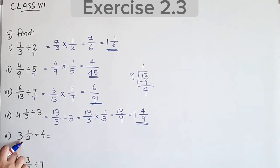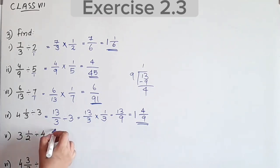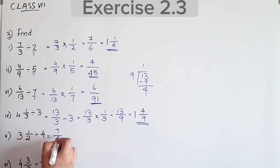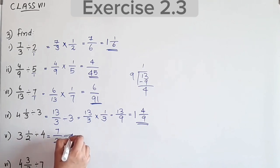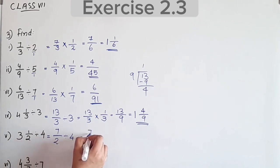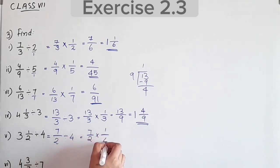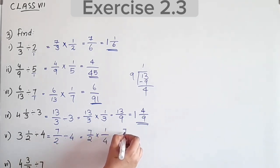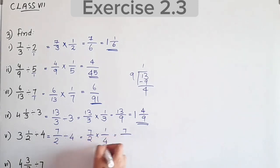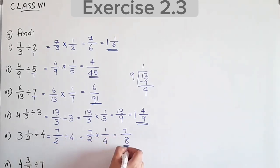Next question: 3½ divided by 4. Convert: 3 into 2 is 6, plus 1 is 7, so 7/2. Divided by 4 equals 7/2 into reciprocal of 4, which is 1/4. Equal to 7 by 8. This is a proper fraction.